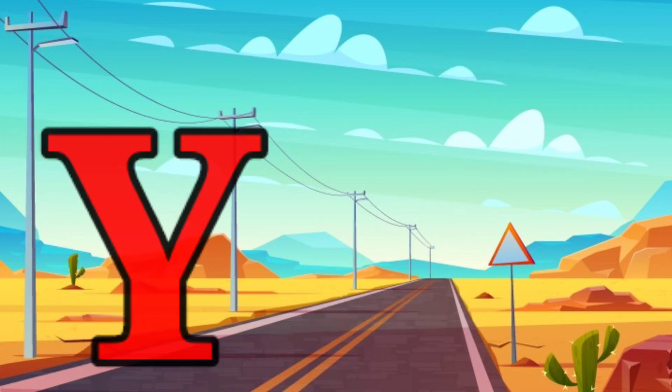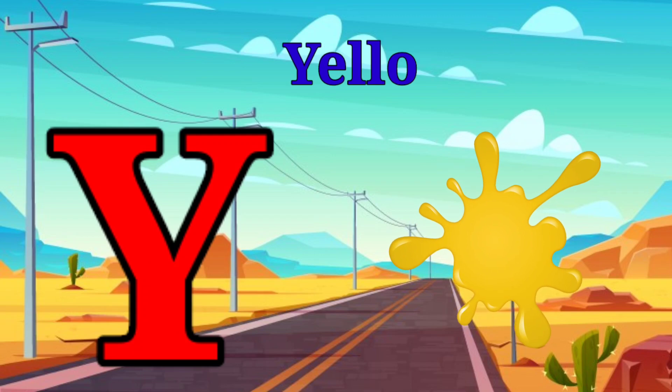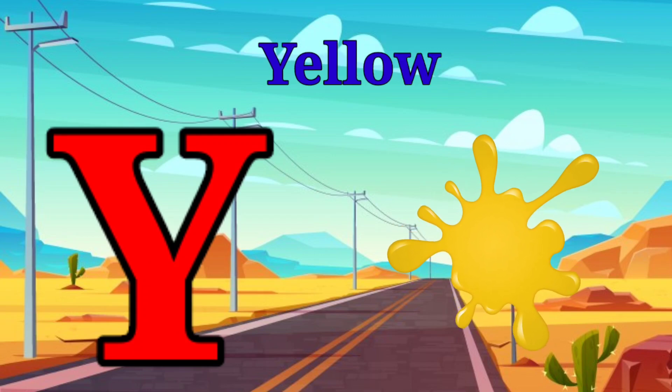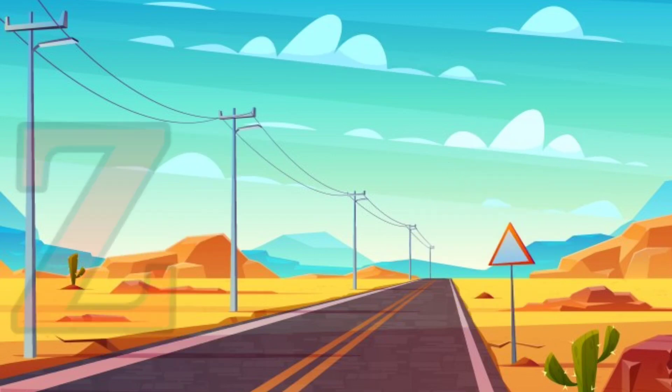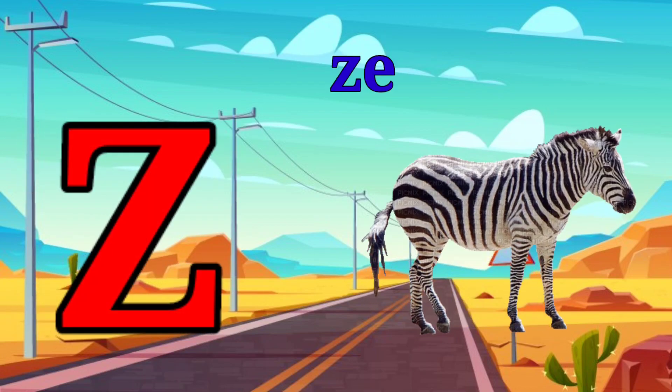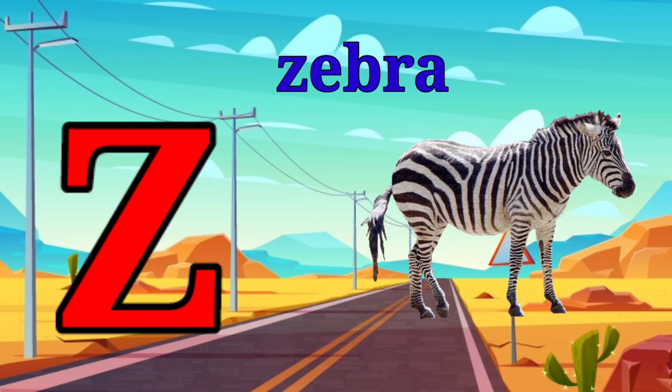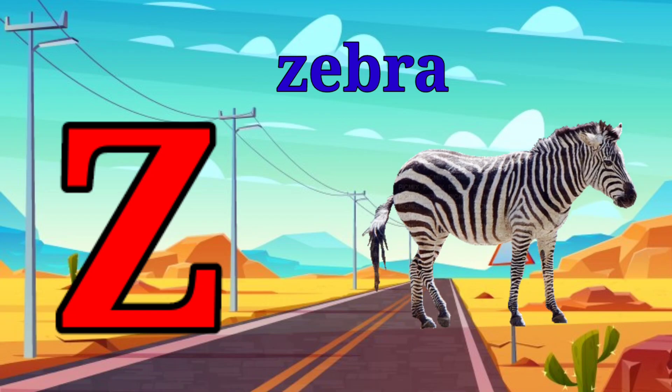Y is for yellow, y-y-yellow. Z is for zebra, z-z-zebra.